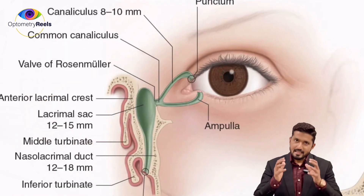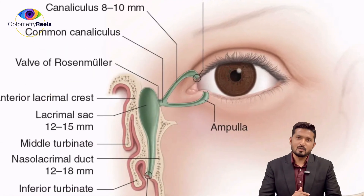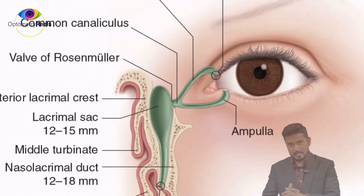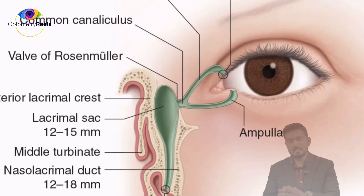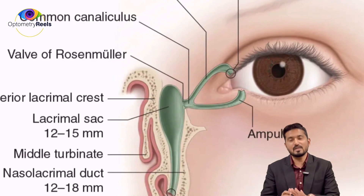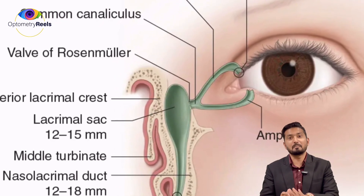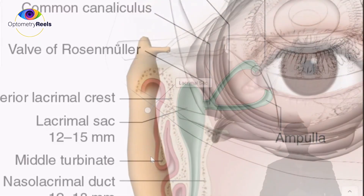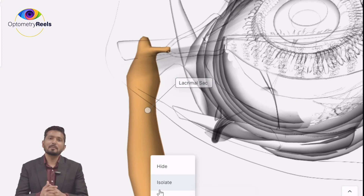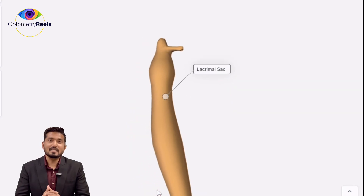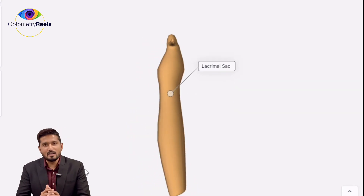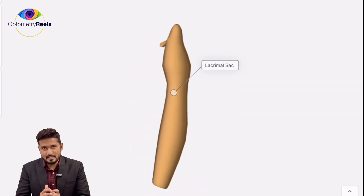At the common canaliculus, there is a valve called the valve of Rosenmuller, which prevents the reflux of tears back to the punctum. After the common canaliculus, there is a reservoir called the lacrimal sac.